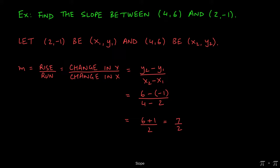So we get our answer, m equals 7 halves. So the slope of the line between 4 comma 6 and 2 comma negative 1 is 7 over 2.